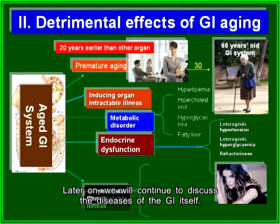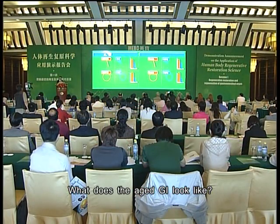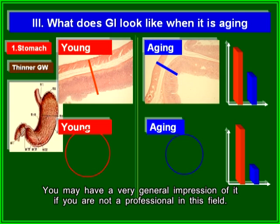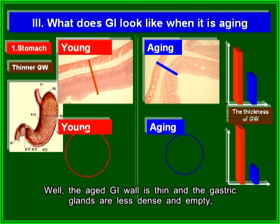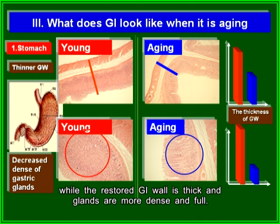We will now discuss the diseases of the GI itself and what the aged GI looks like. The aged GI wall is thin and the gastric glands are less dense and empty, while the restored GI wall is thick and glands are more dense and full.